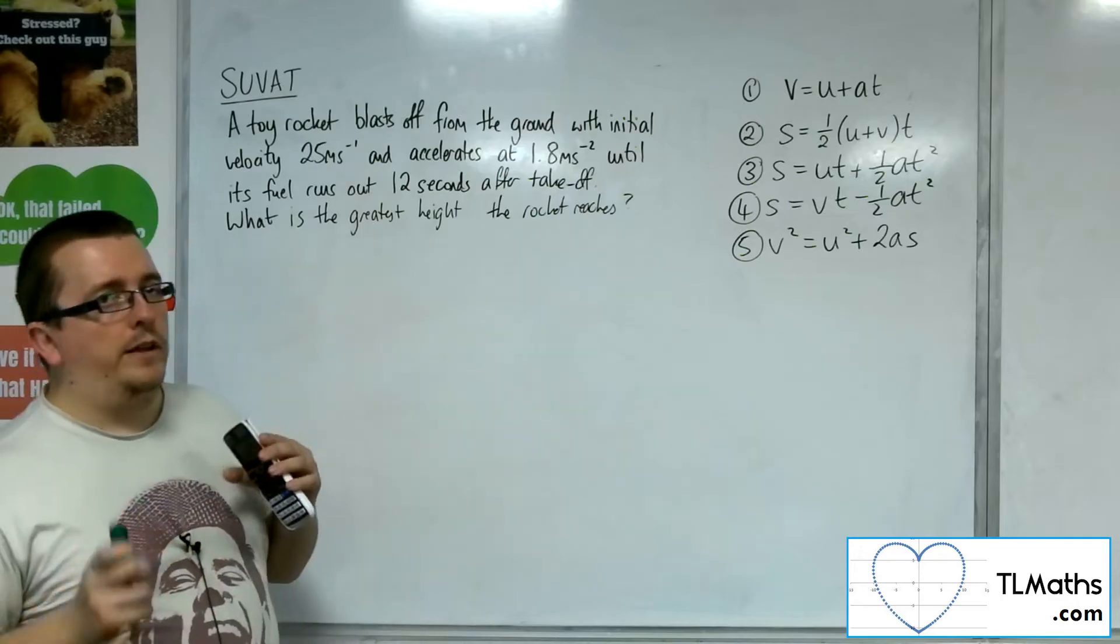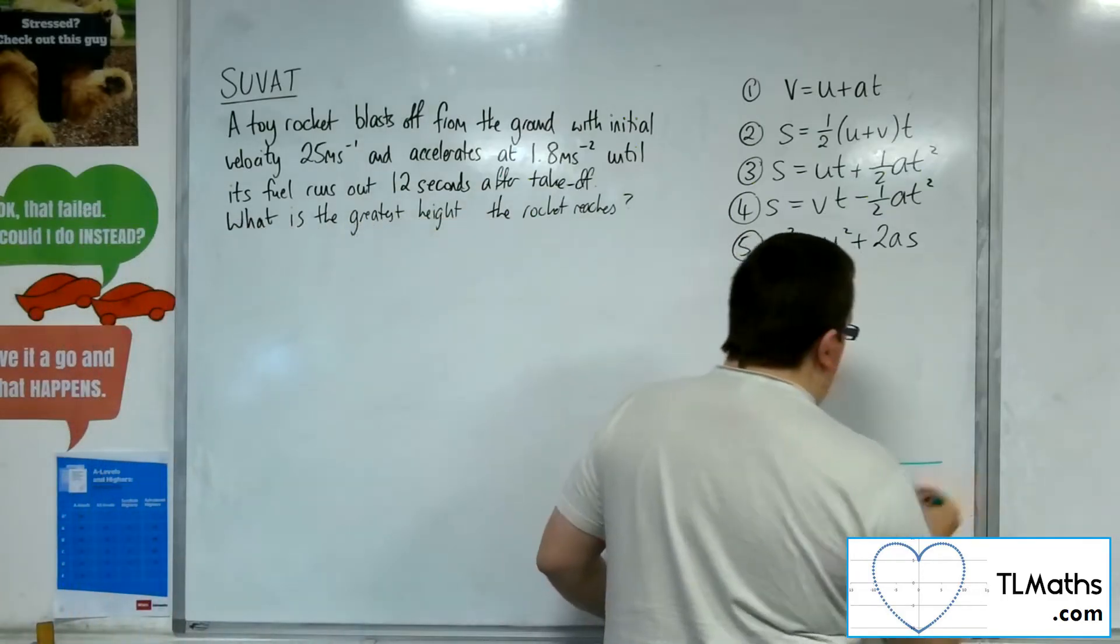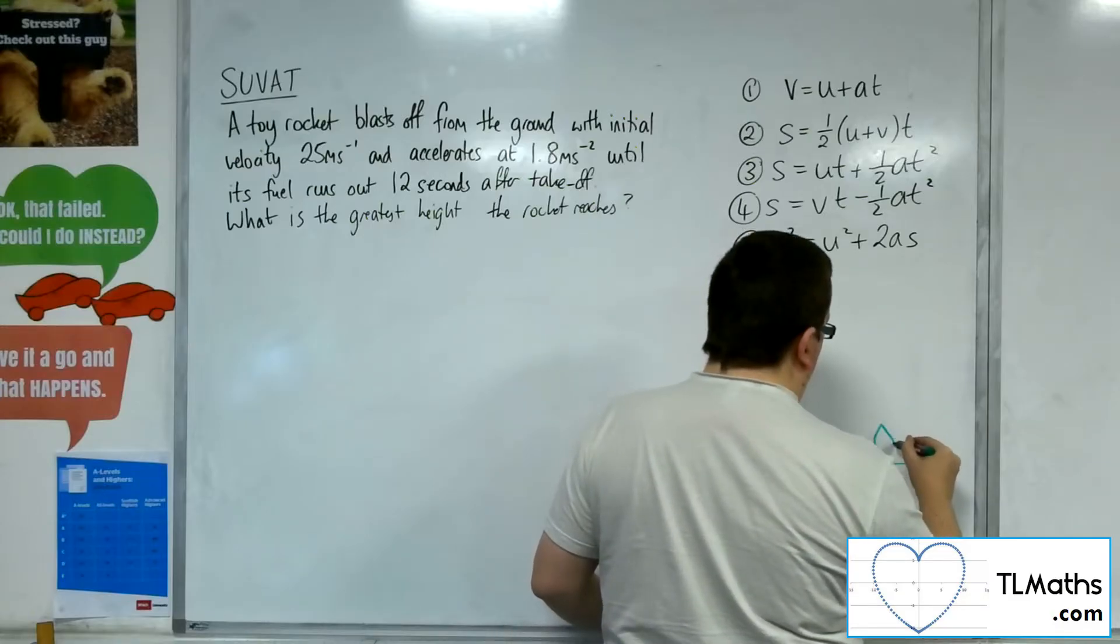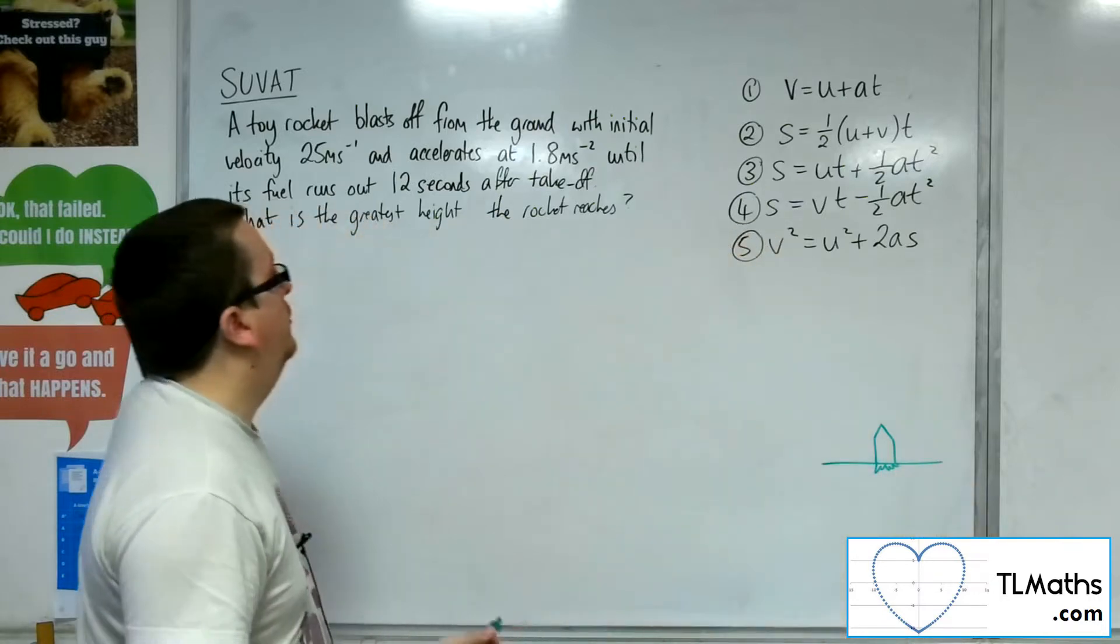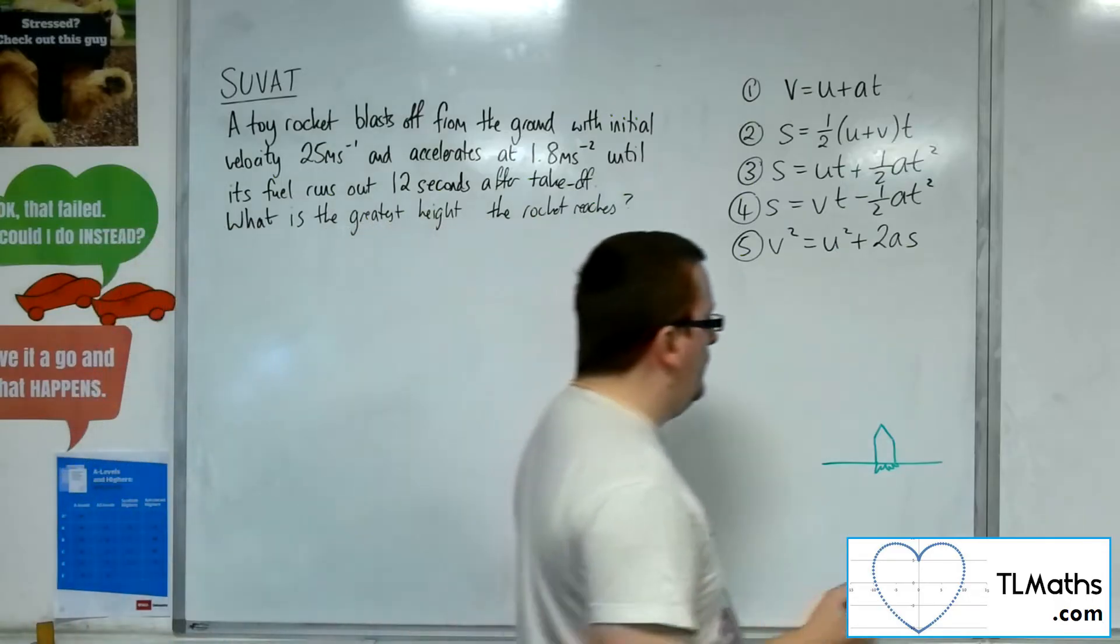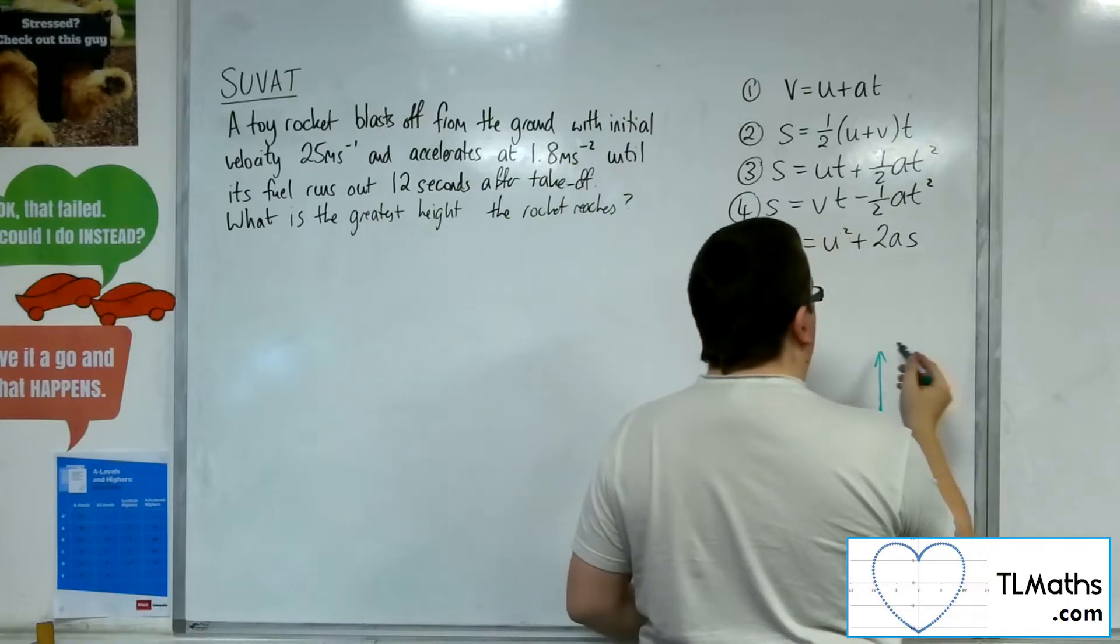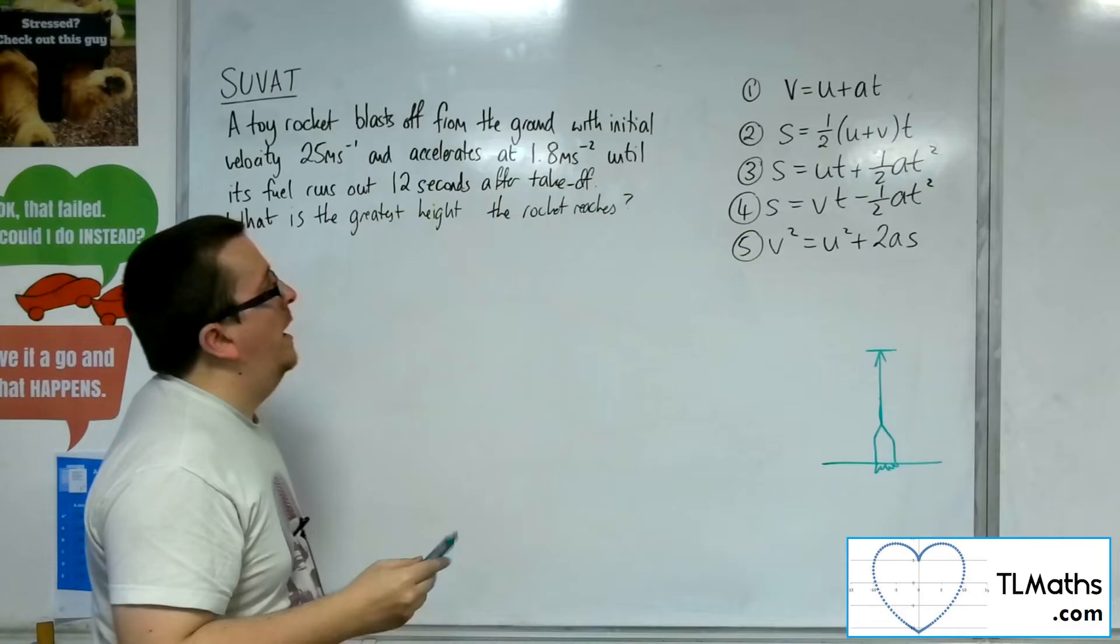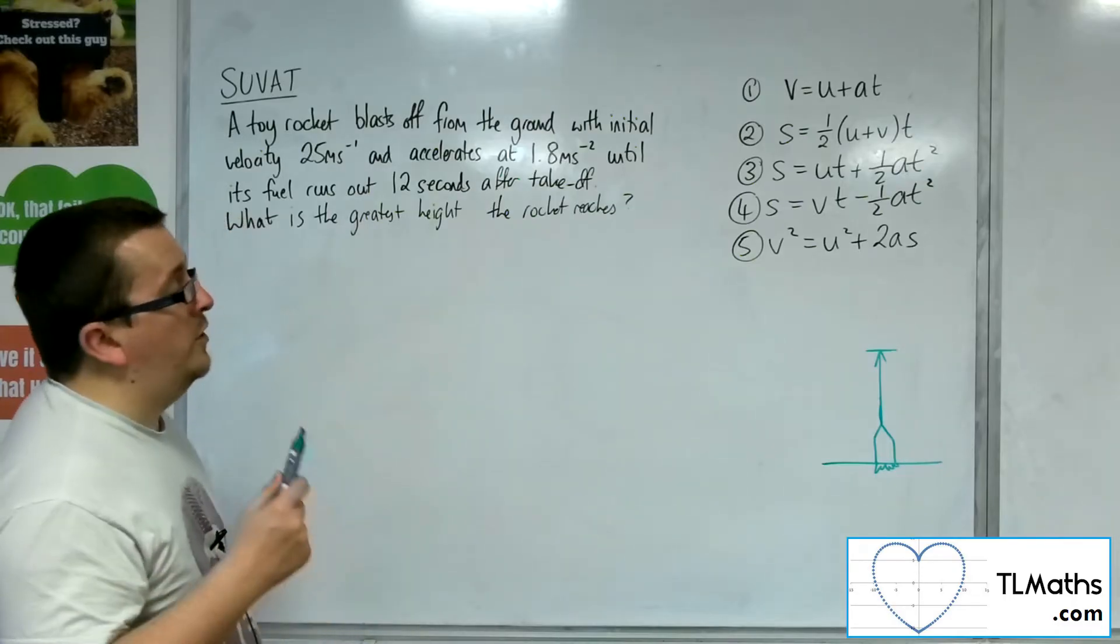So let's visualize what's going on here. Here's the ground and then you've got your rocket blasting off at that initial speed of 25 meters per second. It's going to be travelling directly upwards, and it's going to reach a height where 12 seconds later after takeoff it's going to run out of fuel.